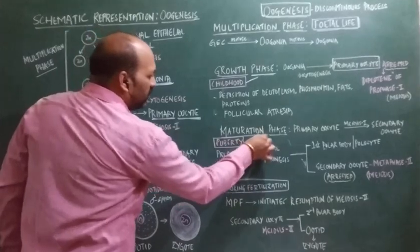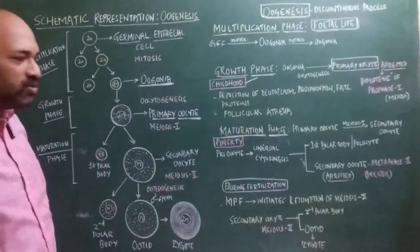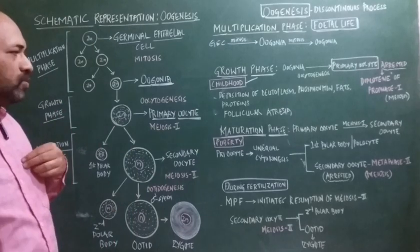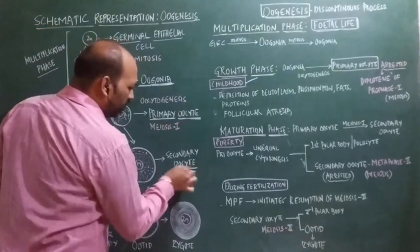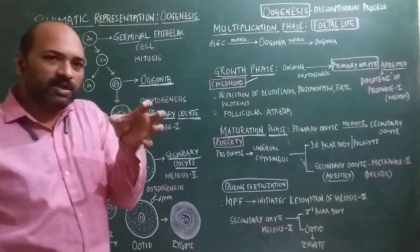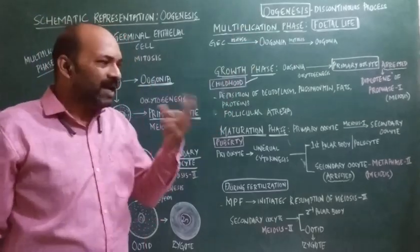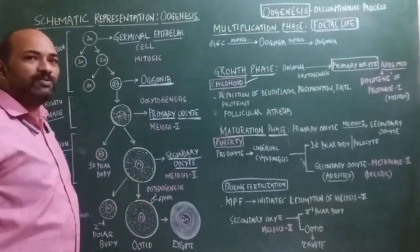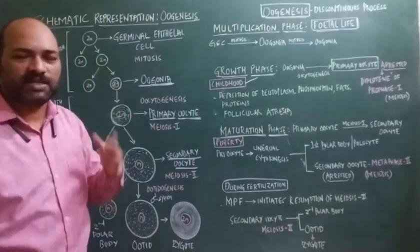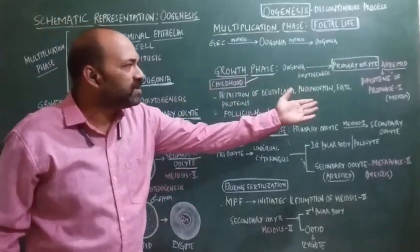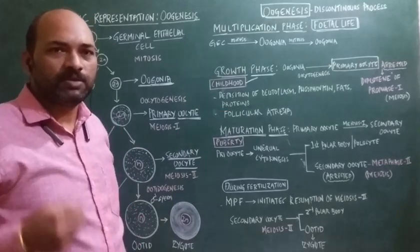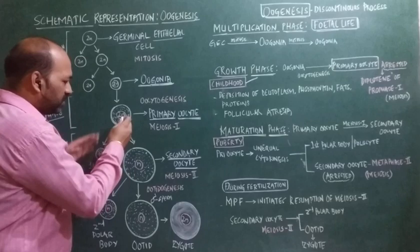From the growth phase, where the primary oocyte is formed from the oogonia, we move to the third phase — the maturation phase — which occurs once the female attains puberty. Under the influence of hormones, the primary oocyte now gets converted into a secondary oocyte. The nucleus shifts towards the animal pole, and being diploid, it undergoes resumption of meiosis — progressing from diplotene through the remaining stages of prophase I, entering metaphase I, and ultimately completing meiosis I.